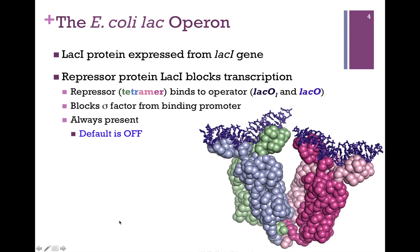The LAC-I protein is expressed from the LAC-I gene. It's actually a tetramer repressor protein, shown in our space-filling model here. The tetramer of the LAC-I protein is shown in blue, green, and two shades of pink, and it binds to the operator region of the DNA pictured in purple. It blocks the sigma factor of RNA polymerase from binding the promoter and shuts down transcription. LAC-I is always present, so the default condition of the operon is off — why express the genes if we have no lactose to process?